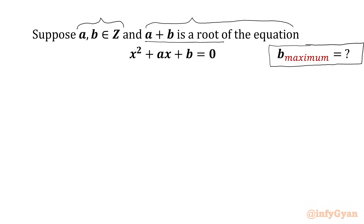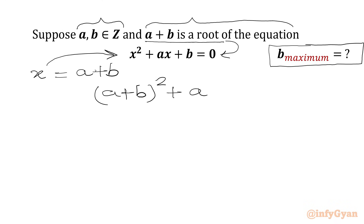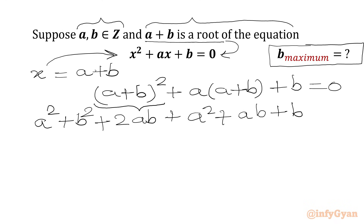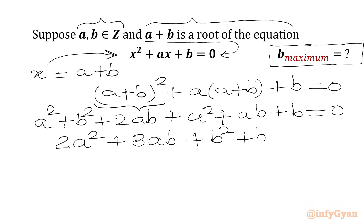We have a + b as a root of this equation, so we can plug in x = a + b into our equation. We will get (a + b)² + a(a + b) + b = 0. Now we will use the (a + b)² formula and write a² + b² + 2ab + a² + ab + b = 0.